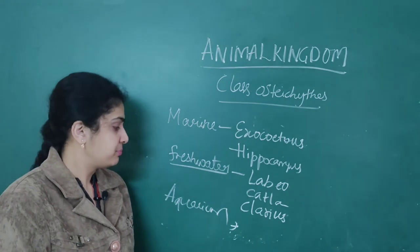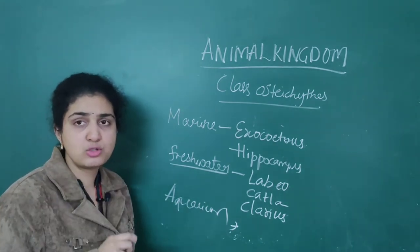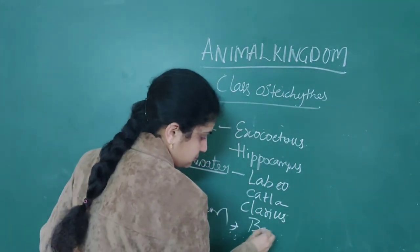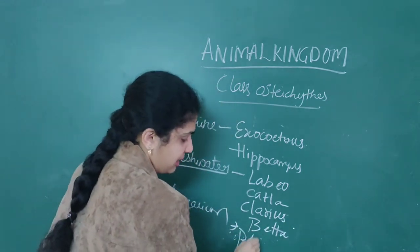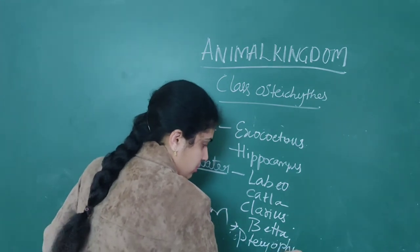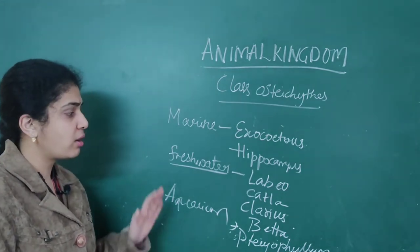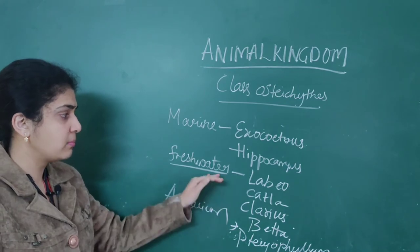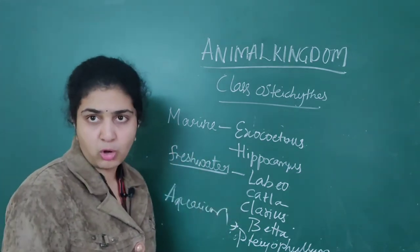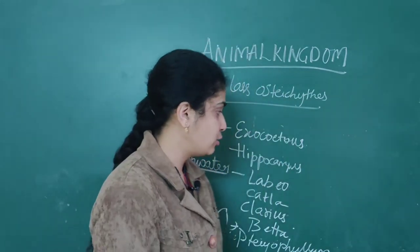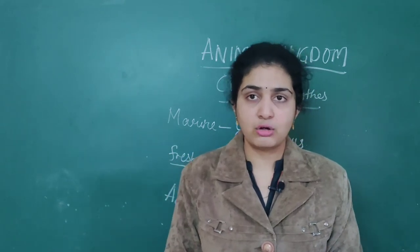The third category is aquarium organisms — fishes you can grow in an aquarium. Those are Betta and Pterophyllum. These are the two organisms associated with aquarium. So freshwater has three examples, marine has two examples, and aquarium has two examples.